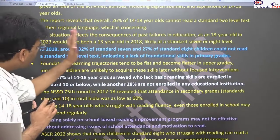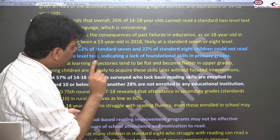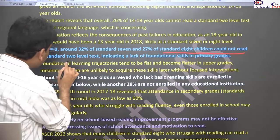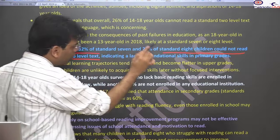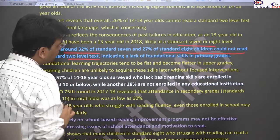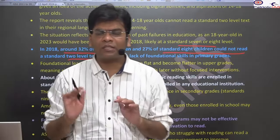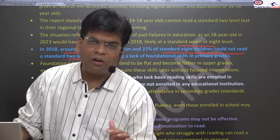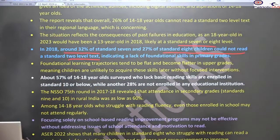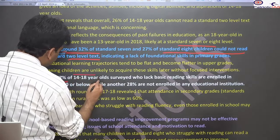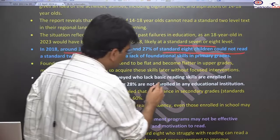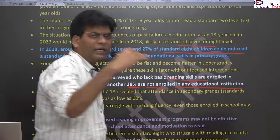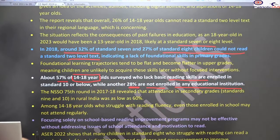Most students getting education are not able to read an 8th standard book, and in many cases they are not able to read even Class 2 level material. Those in Class 8 are not able to read basic Hindi or English textbooks of Class 2, and they are not able to do simple two-three digit multiplication or addition. About 57 percent of the age group between 14 to 18 years lack reading skills, and many are not able to enroll in further higher education. 28 percent are not enrolled in any institute.